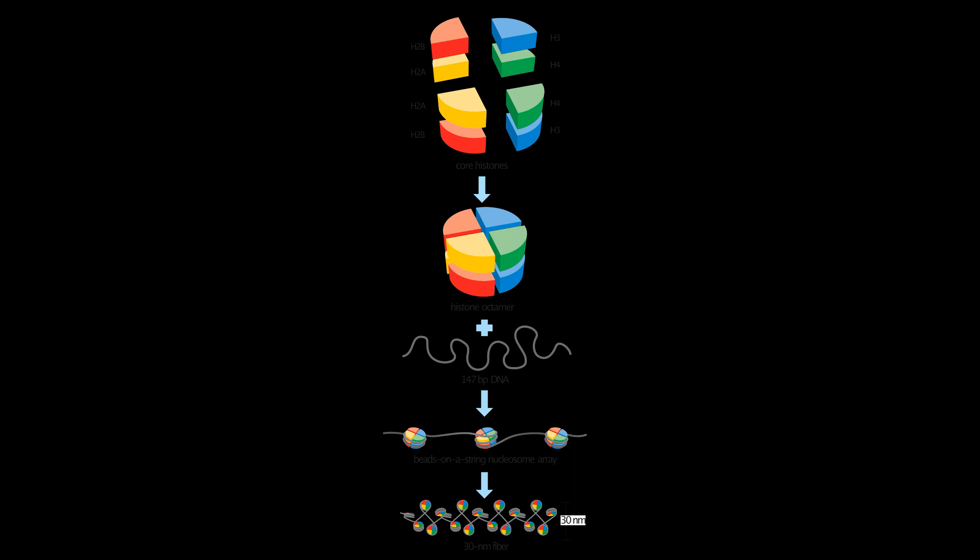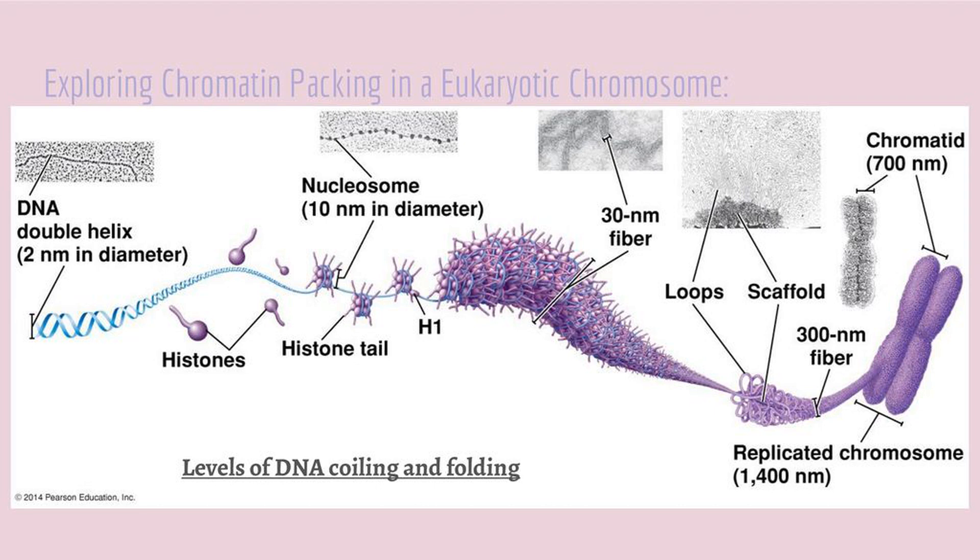DNA packing is primarily done by proteins called histones, of which there are four types. These, together with DNA, form chromatin, the basic unit of which is the nucleosome, each composed of eight histones, containing two of each type. The extent to which the chromatin is compacted depends on the situation. The chromatin can be condensed to form chromatids, which happens before cell division, as was mentioned in an earlier video.